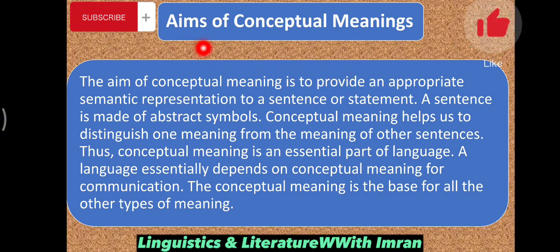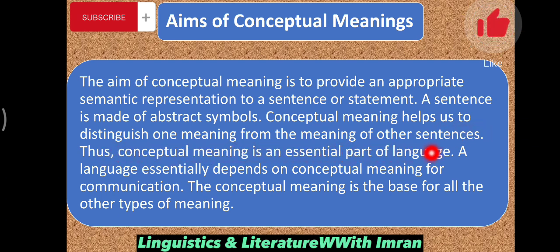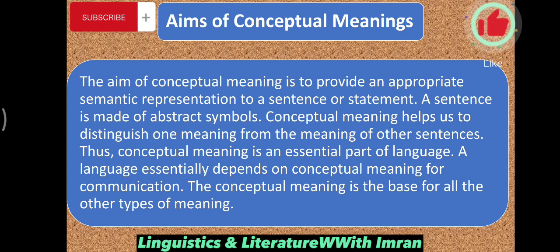The aim of conceptual meaning is to provide an appropriate semantic representation to a sentence or statement. A sentence is made of abstract symbols, and conceptual meanings help us to distinguish one meaning from the meaning of other sentences. A language essentially depends on conceptual meaning for communication, and conceptual meaning is the base for all other types of meaning — such as connotative meaning, social meaning, and associative meaning. So conceptual meanings are the core meaning in semantics.